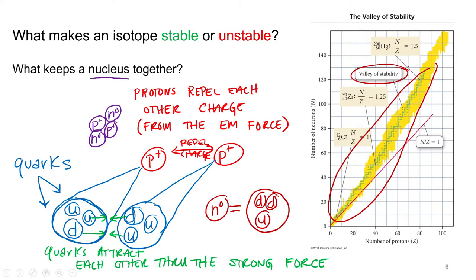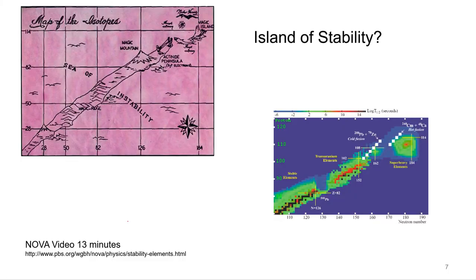Good stuff. So that's what keeps a nucleus stable or unstable. It's all about whether or not you've got more attraction through the strong force or repulsion through electromagnetic force. So we call that area where we have these stable isotopes called the valley of stability.